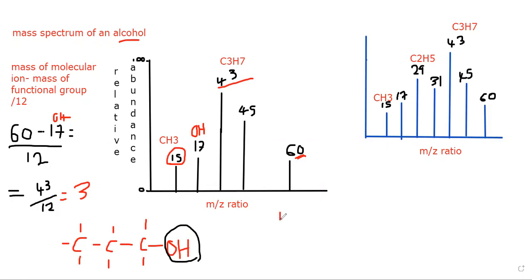Let's work out 45. Since oxygen is present, subtract the mass of OH — the functional group — from 45. If it were a haloalkane you'd subtract the mass of chlorine or bromine. For a carboxylic acid subtract the mass of COOH. For an ester subtract the mass of two oxygen atoms. We're dealing with an alcohol and the fragment is 45.